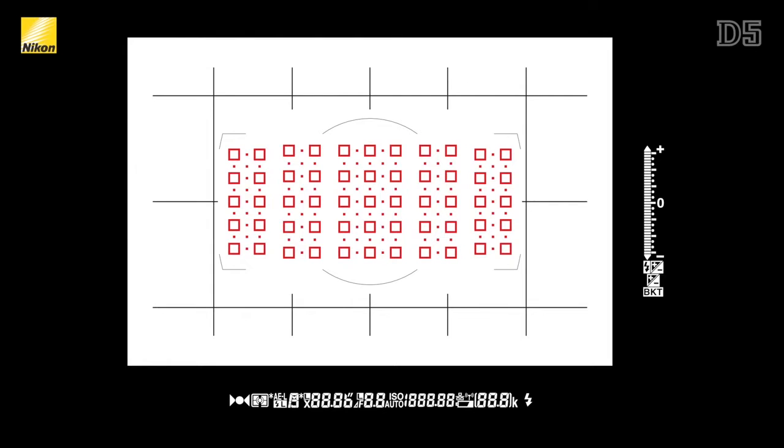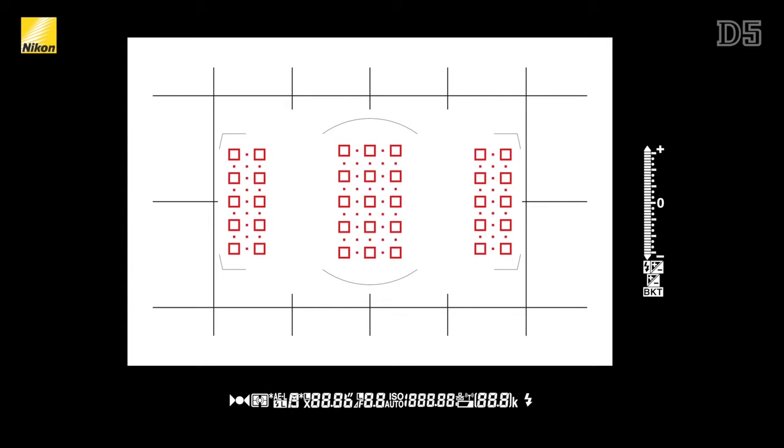Hello, my name is Mark Cruz and in this installment of the D5 video series I'll be going over the new autofocus and metering systems. In the stills photography installment I went over the basics of the new system: 153 high-density AF points, 55 of which are selectable, 99 cross-type sensors, 35 of which are selectable, and an increased area coverage of 30% over the D4S.